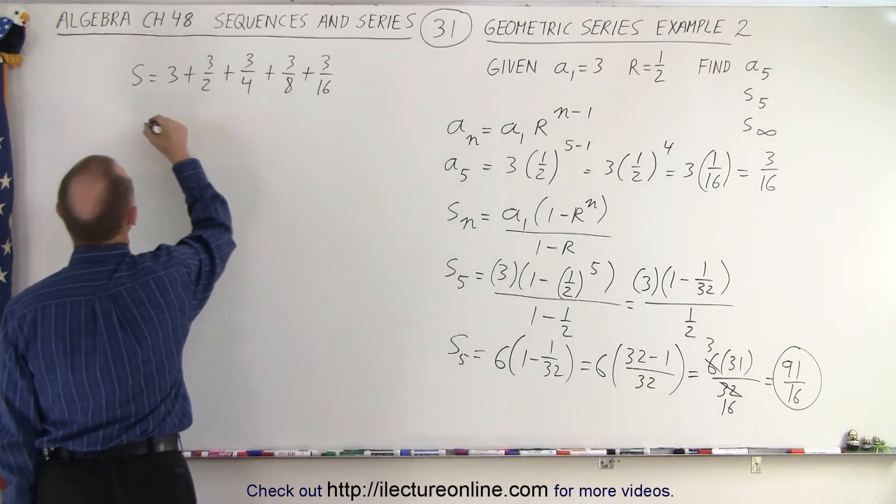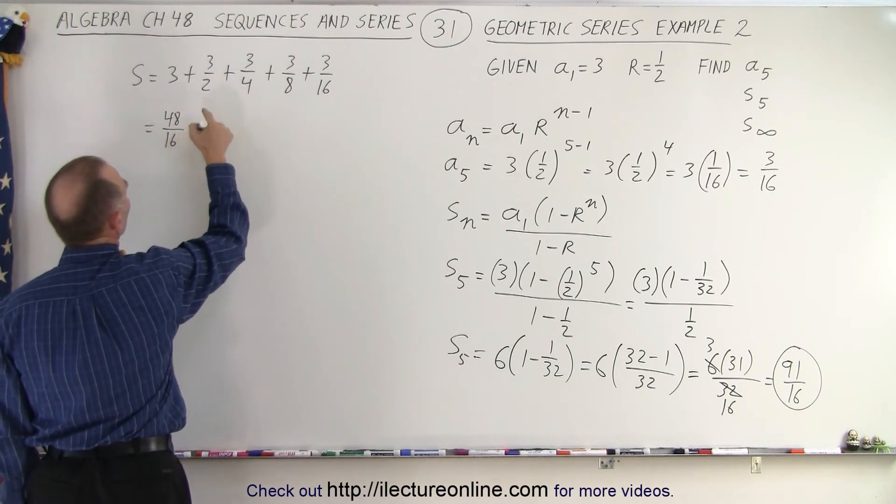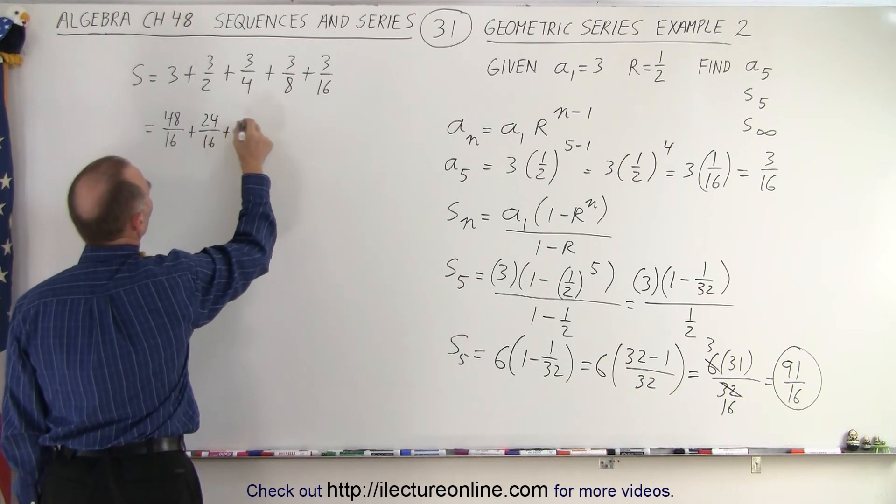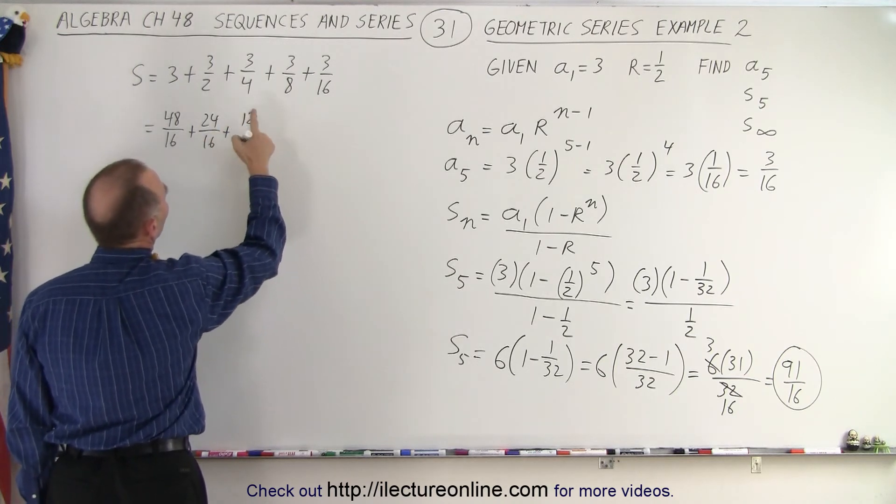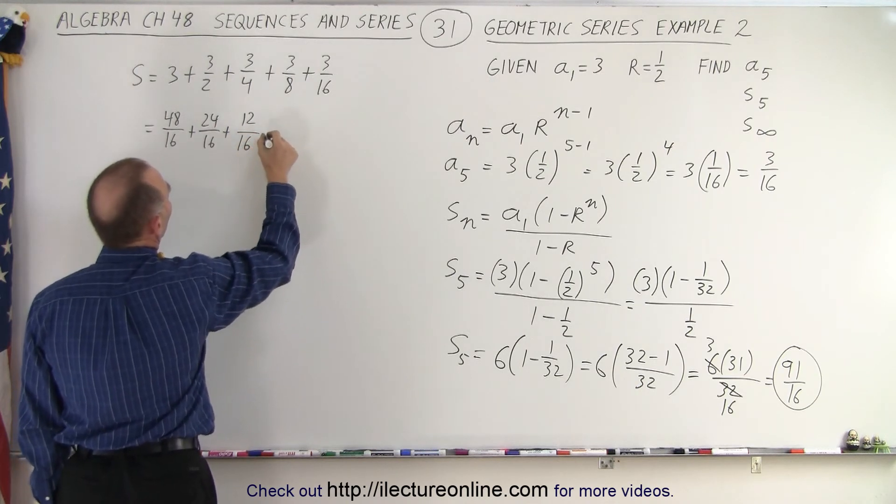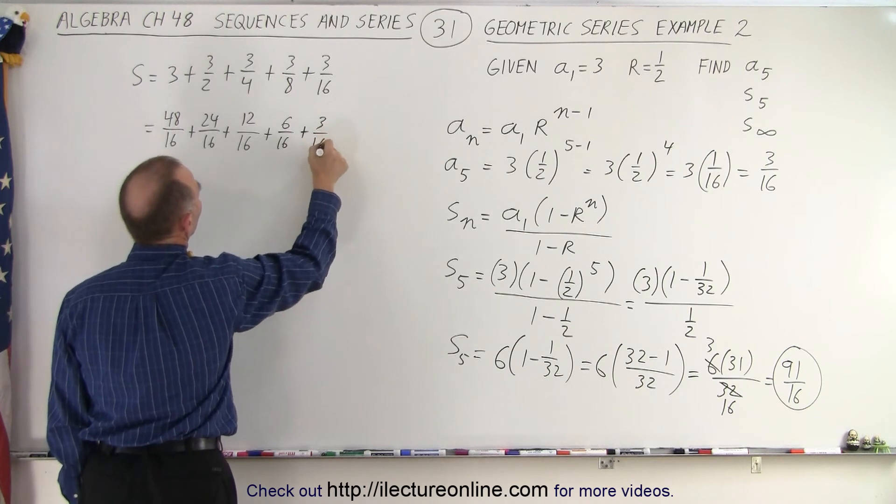The common denominator is 16. So that would be 48 over 16. Plus 2, that's 8. That's 24 over 16. Plus that would be 12, 4 times 3, which is 12 over 16. That would be 6 over 16. Plus 3 over 16.